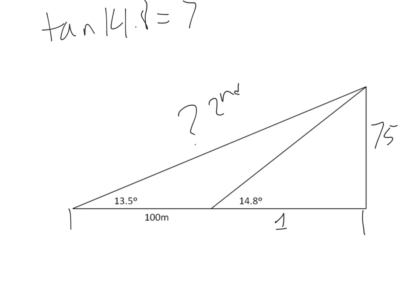75 divided by, we don't know, number one, whatever this is, call it X. Rearrange the formula, X equals 75 divided by the tan of, there's the bell, 14.8.